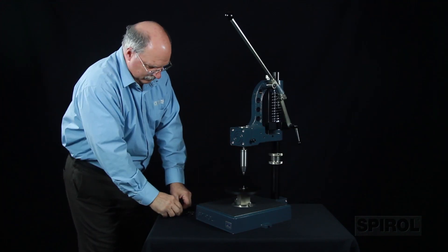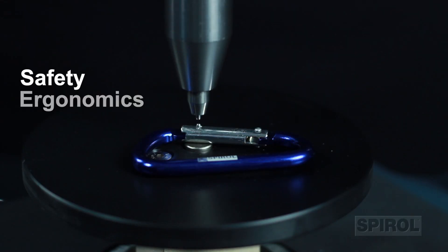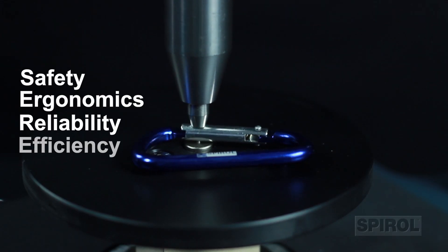As with all Spiral installation machines, the model PM manual insertion machine is engineered with safety, ergonomics, reliability, and efficiency in mind.